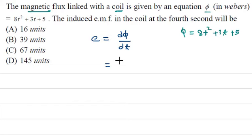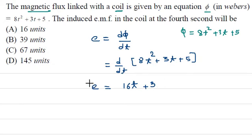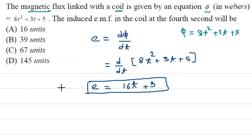Differentiating: E = 16t + 3. This is the equation of induced EMF as a function of time. Now we substitute t = 4 seconds, since we need the EMF at the 4th second.